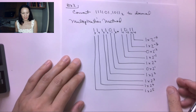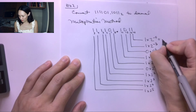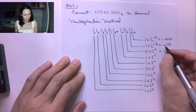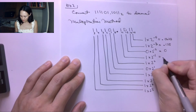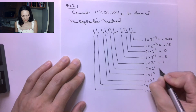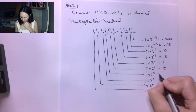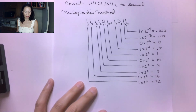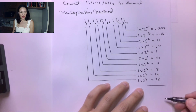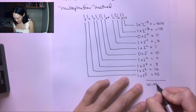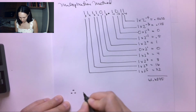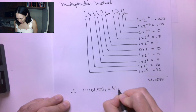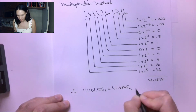Now we have all of our multiplications set up. These products give us: 0.0625, 0.125, 0, 0.5, 1, 0, 4, 8, 16, and 32. We add all of these products straight down together and we get 61.6875. Therefore, 111101.1011 in binary is equivalent to 61.6875 in decimal.